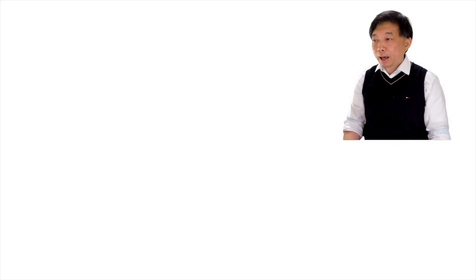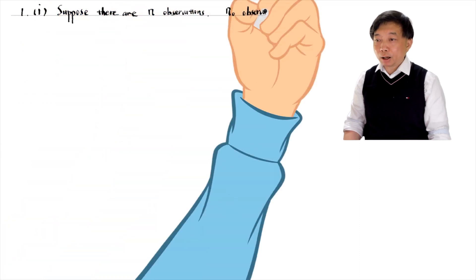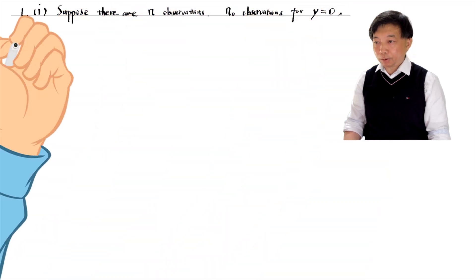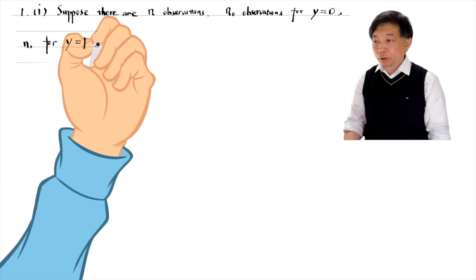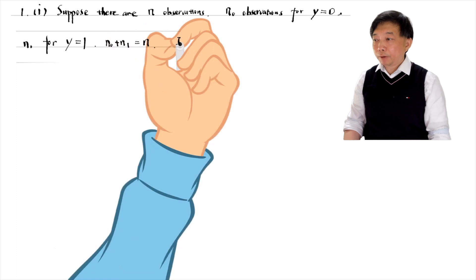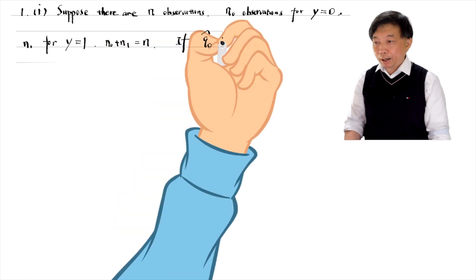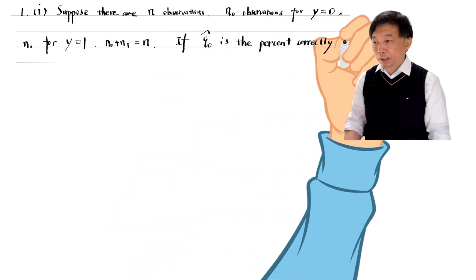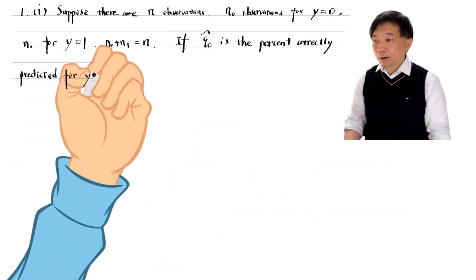Suppose there were n observations: n₀ observations are for the outcome y equals zero and n₁ observations are for the outcome y equals one. The sum of n₀ and n₁ is the total observations n.